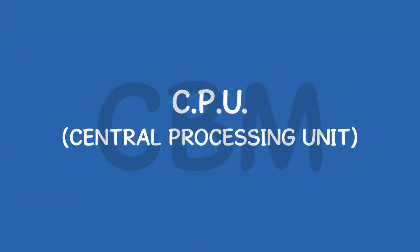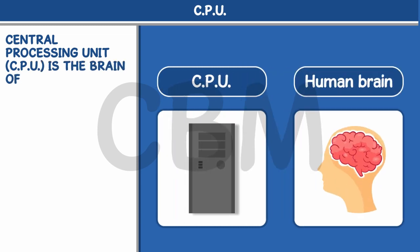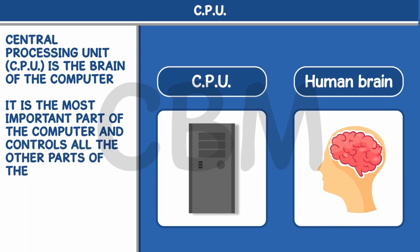CPU. Central Processing Unit is the brain of the computer. It is the most important part of the computer and controls all the other parts of the computer.